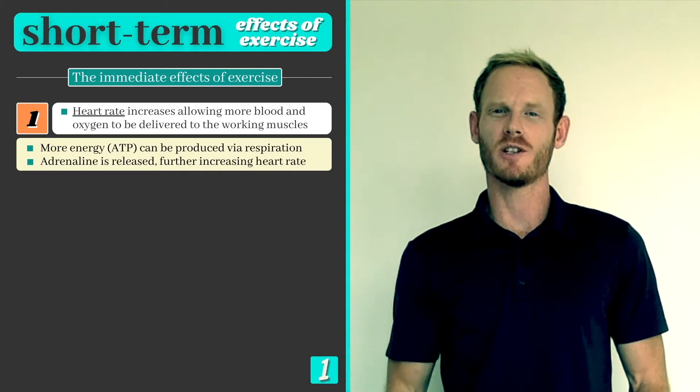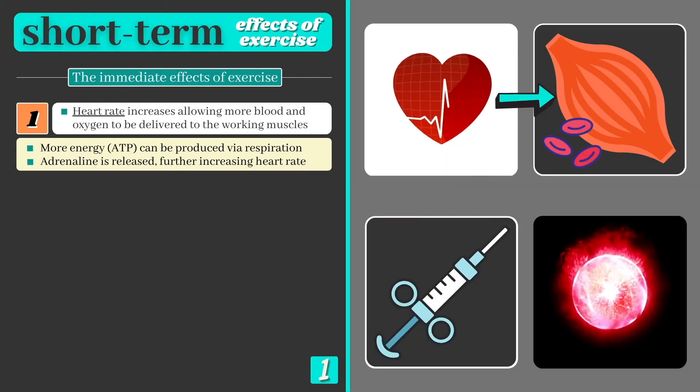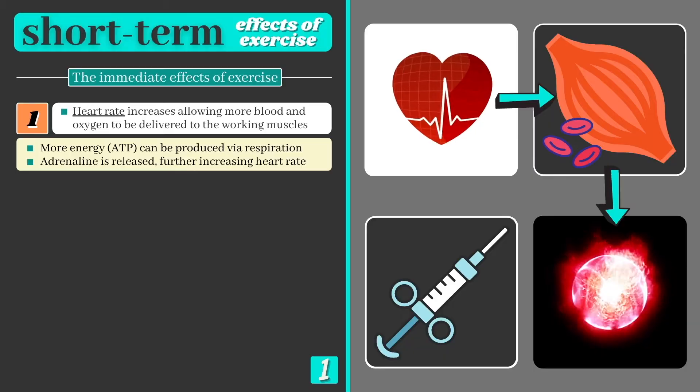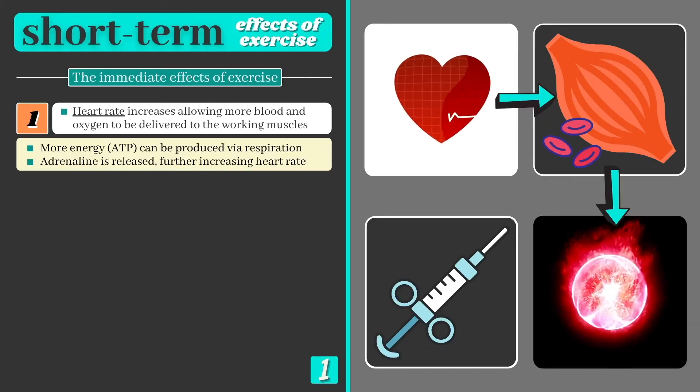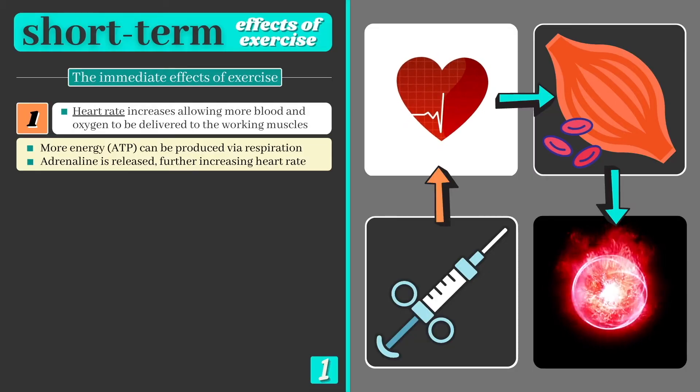Perhaps the most obvious response to exercise is an increase in heart rate. This allows more blood and oxygen to be delivered to the working muscles allowing us to convert glucose into energy at a much faster rate. This mechanism is regulated by the hormone adrenaline which is released during exercise and causes the heart to beat even more quickly.